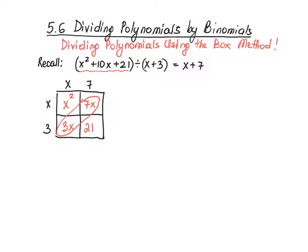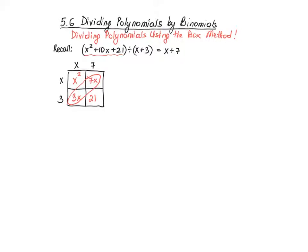I'm going to use the same idea to do the division from scratch. So let's pretend that I have this problem x squared plus 10x plus 21 and I would like to divide this by x plus 3 and I don't know what the result is.